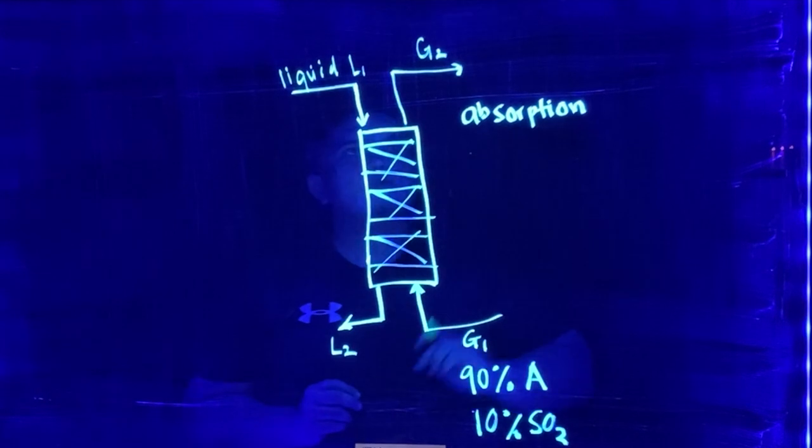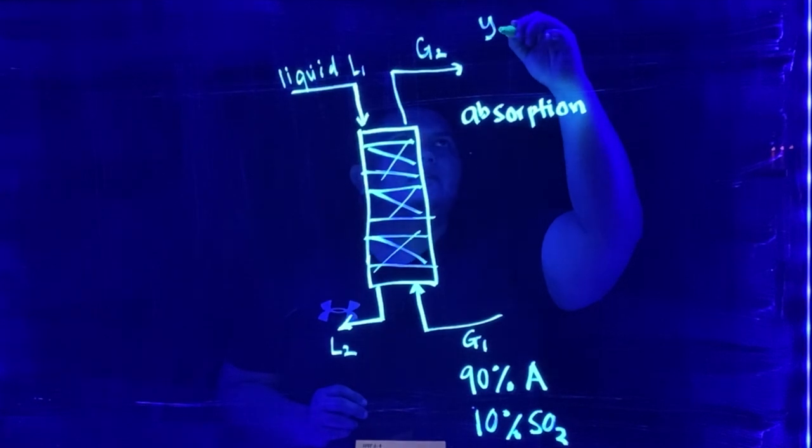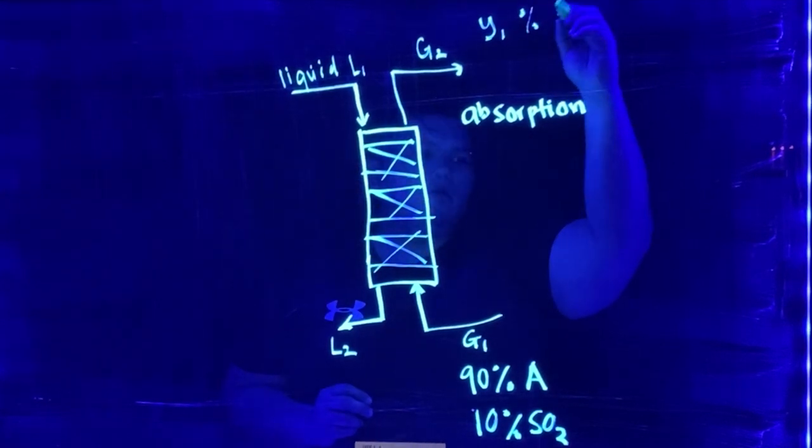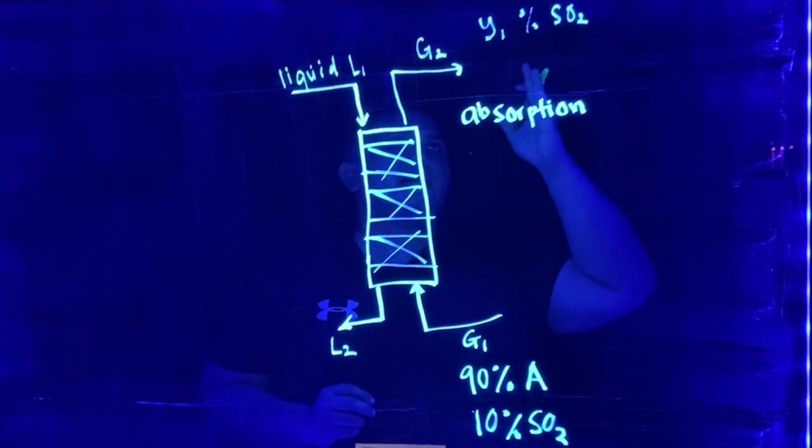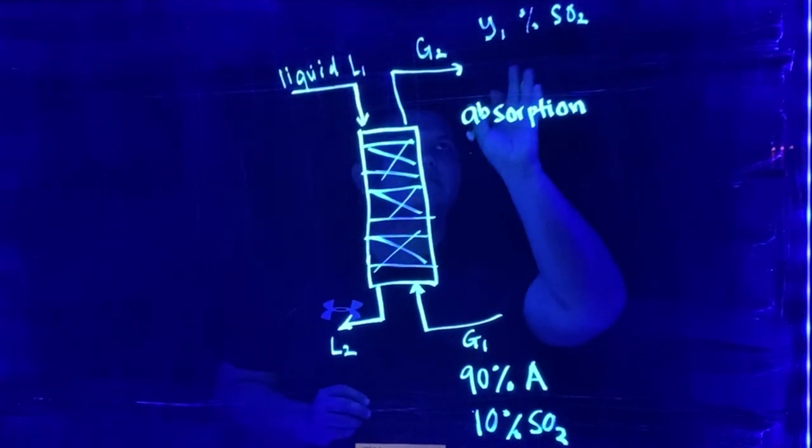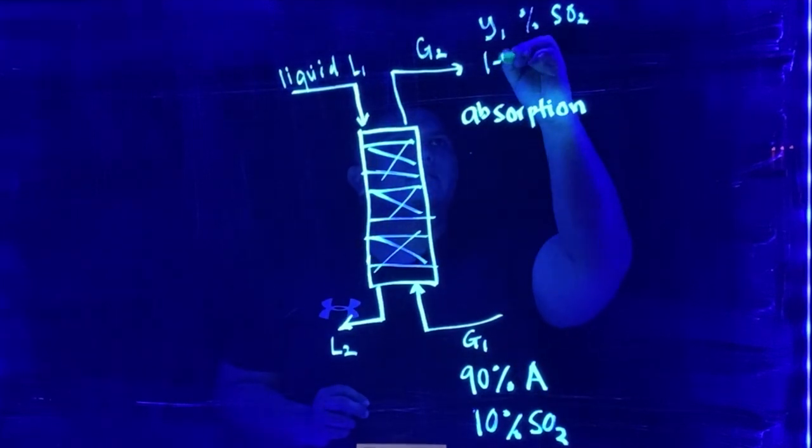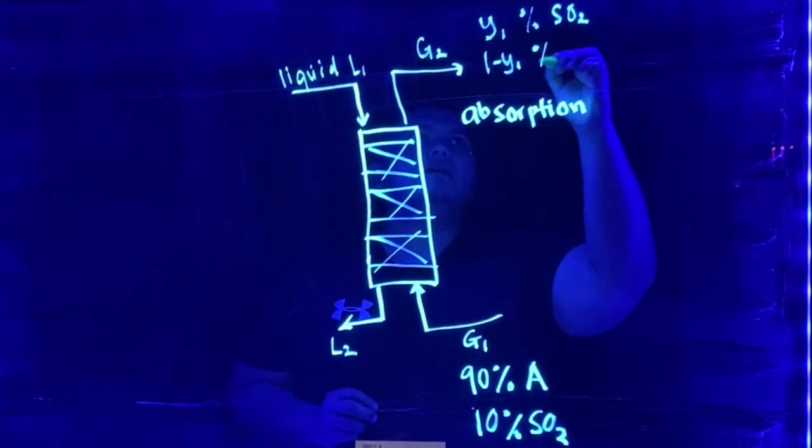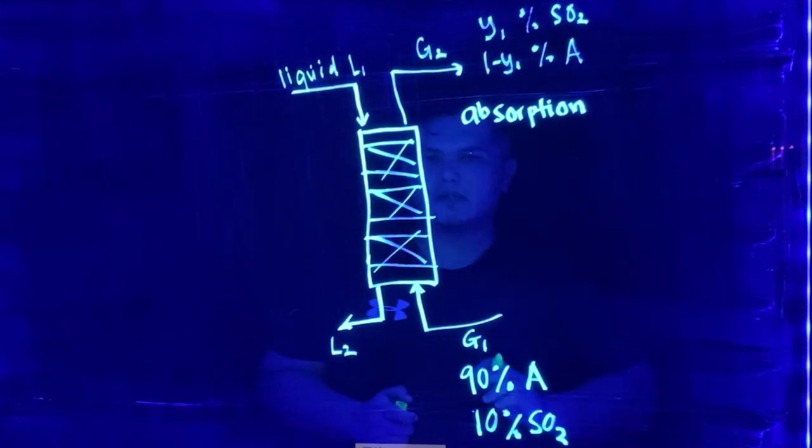By the end of this, we're going to have this is Y1, which is the percent of sulfur dioxide which has been removed. Maybe we have some left over here, and then we're going to have 1 minus Y1 percent of the species gas A, which is unaffected during the scrubbing process.